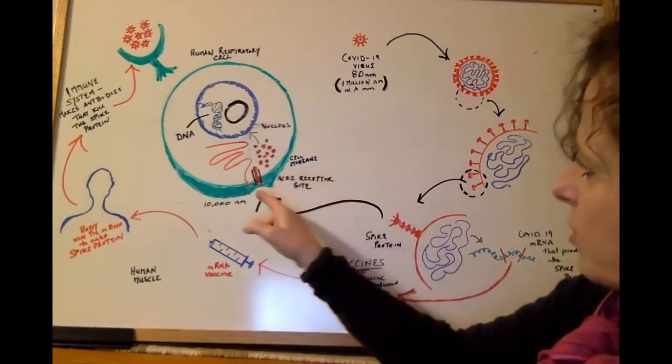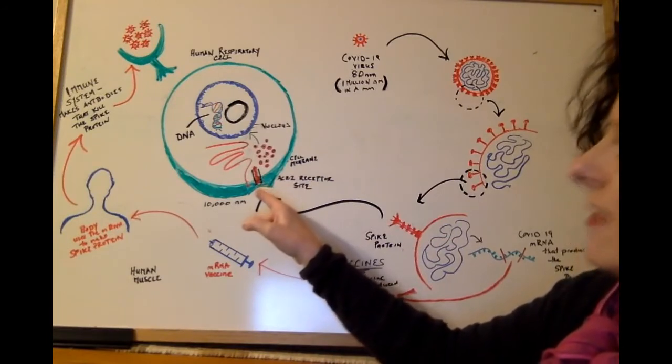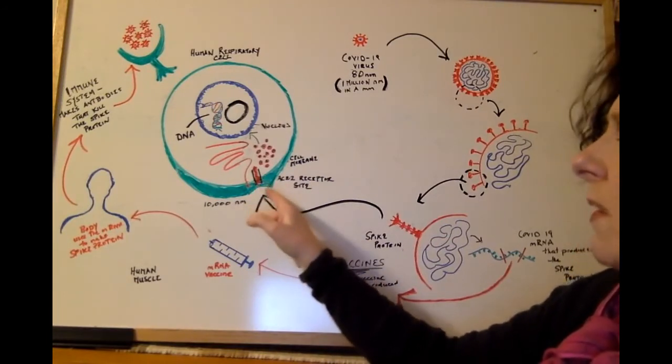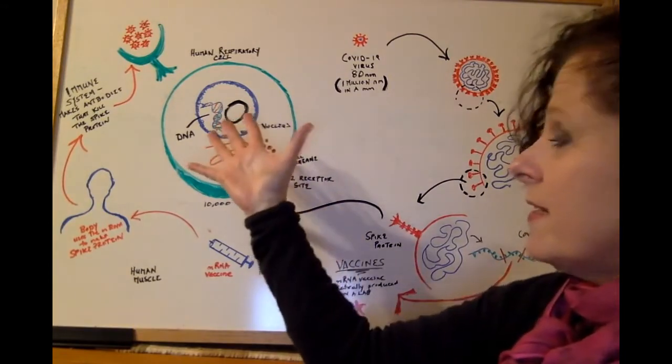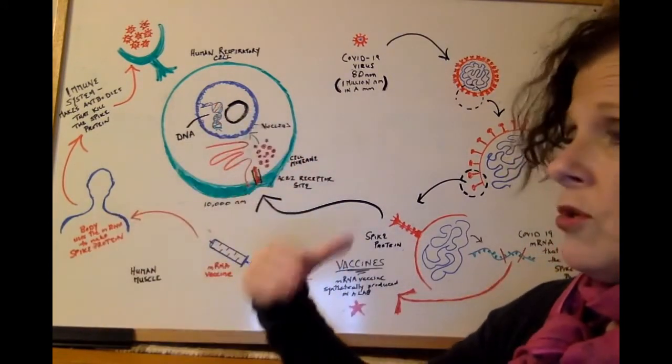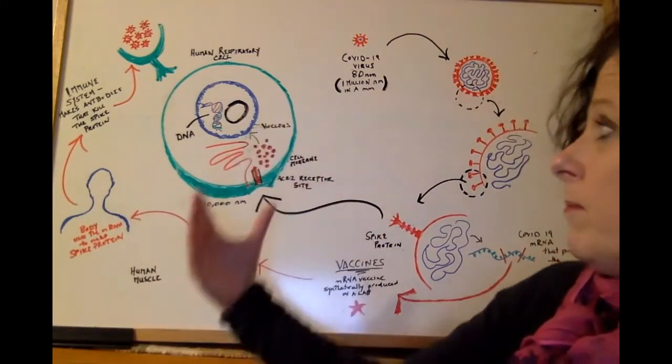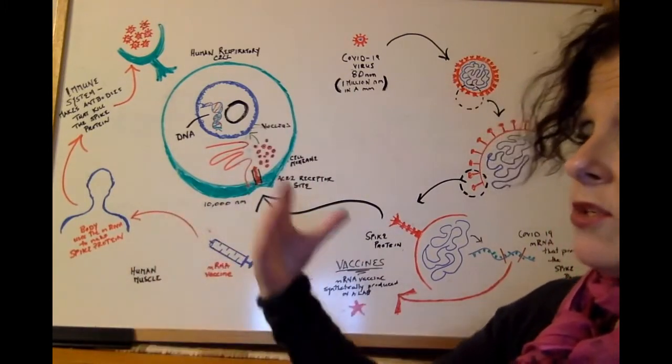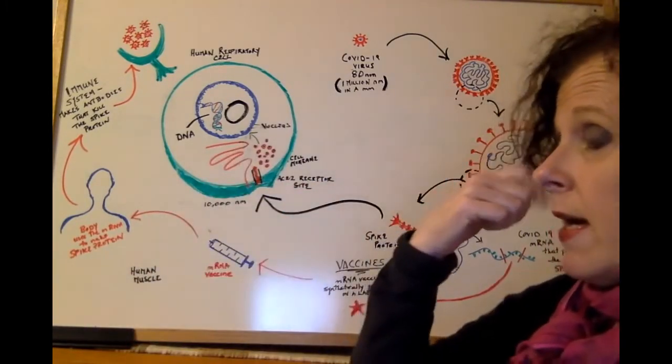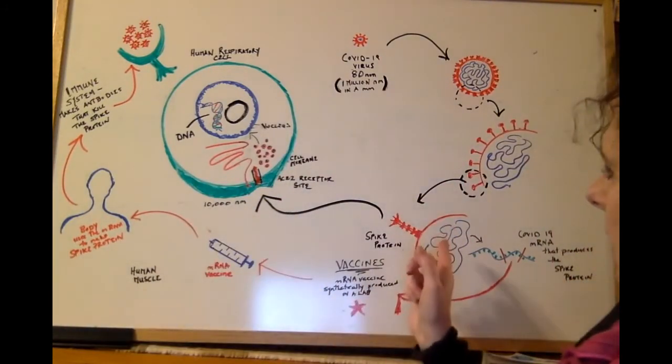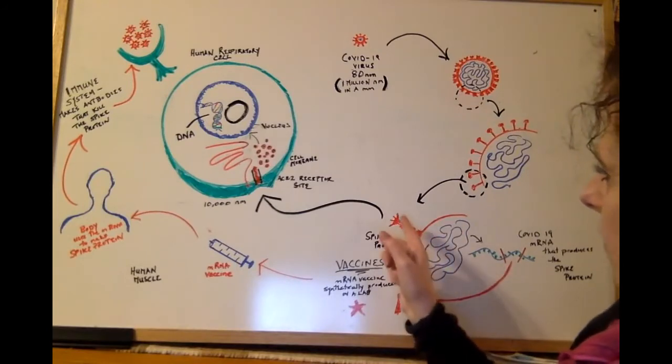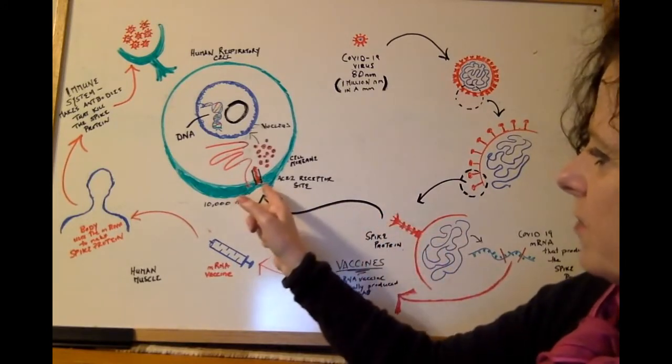Spike proteins attach to a receptor site on your cells. These are like little doorways or little holes in the cells, which will open up and allow certain things in, things that it needs to do the work that it does. Medications can enter in this way to alter a cell so that a person's disease is looked after. But essentially, you have the virus, its spike protein, attaching to a receptor site.